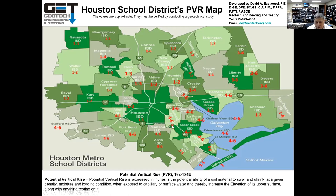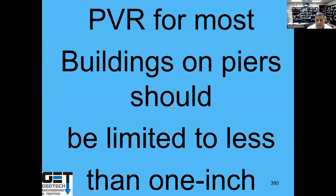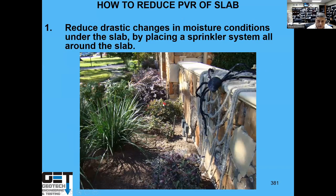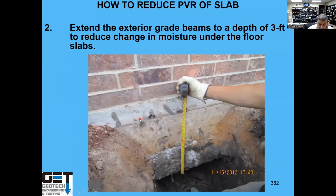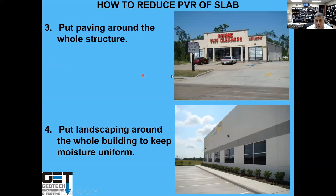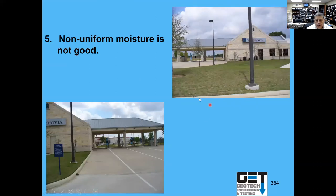PVR for most buildings should be limited to 1 inch. One of the ways to reduce PVR is to put a sprinkler system — when you put sprinkler systems around your building, make sure you put them uniformly all around to keep the moisture uniform. If the moisture is not uniform, you're going to get heave. Your exterior beams should be deep — the deeper your exterior beam, the less chance of water getting underneath the building and causing movements. A 36-inch deep exterior beam is recommended. Put paving around the building to reduce the chance of moisture-driven movement.